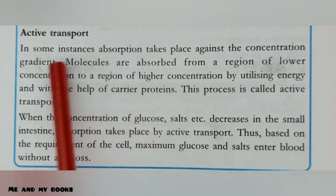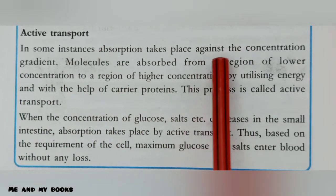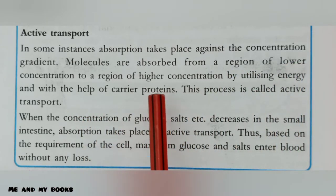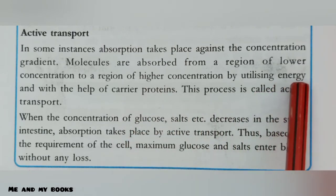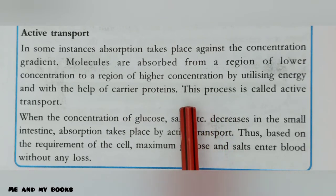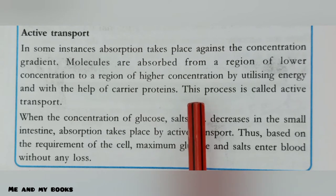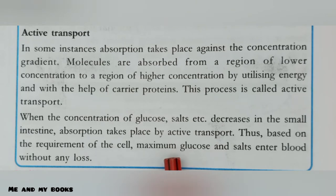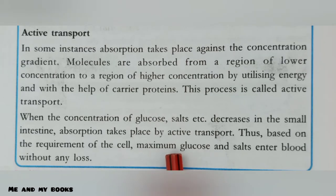Active transport: in some instances, absorption takes place against the concentration gradient. Molecules are absorbed from a region of lower concentration to a region of higher concentration by utilizing energy and with the help of carrier proteins. This process is called active transport. When the concentration of glucose, salt, etc. decreases in the small intestine, absorption takes place by active transport. Thus, based on the requirement of the cell, maximum glucose and salt enter the blood without any loss.